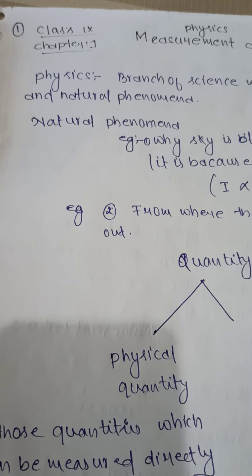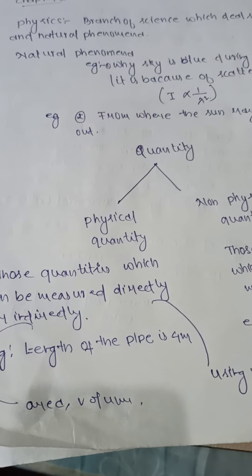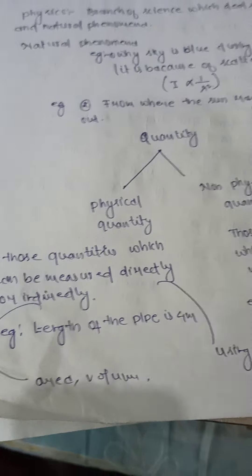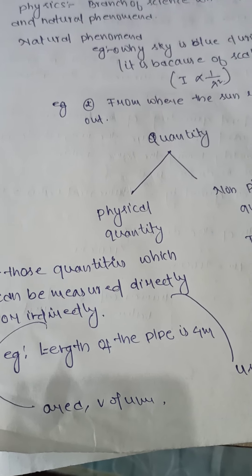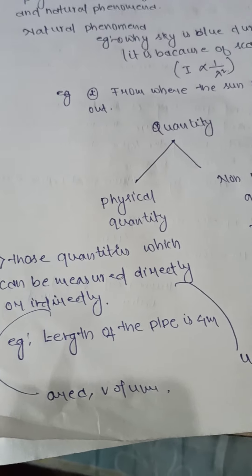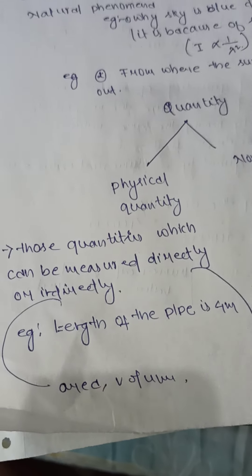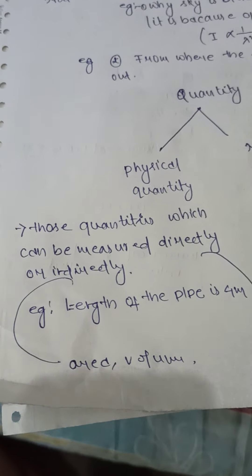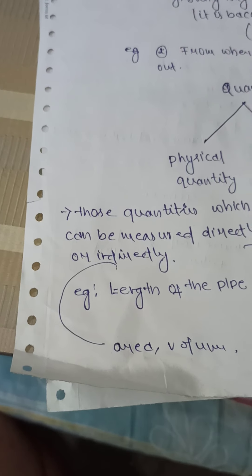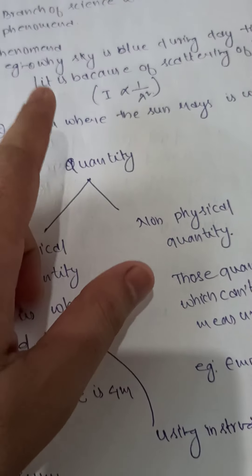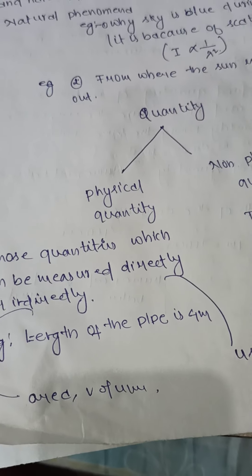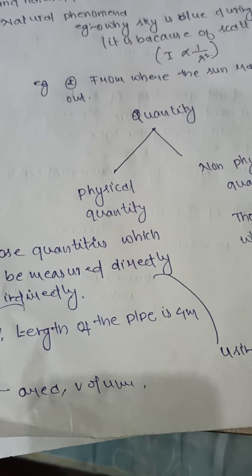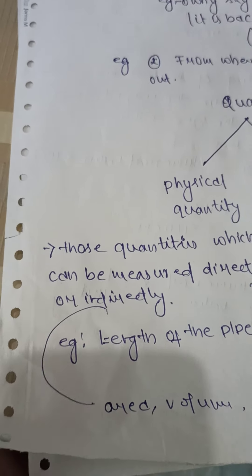Natural phenomena means what is happening in our surroundings — for example, how day and night are made, how the Earth is revolving around the Sun. Another example: why is the sky blue during daytime? These are all natural phenomena, and in physics we study how they happen and where they come from.